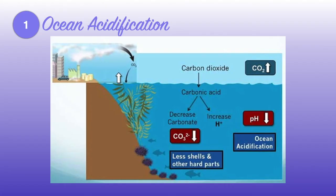Therefore, marine organisms that have shells or skeletons are the most affected because they need calcium carbonate for growth of these parts. Ocean acidification affects biodiversity, the ocean, fishing industries, and the food web. A second example is the food industry.